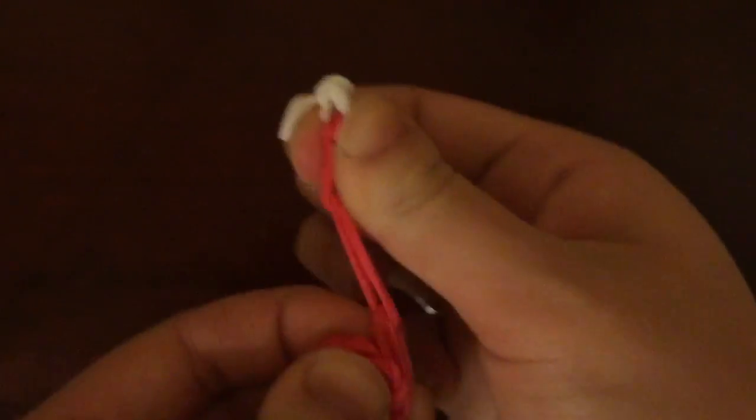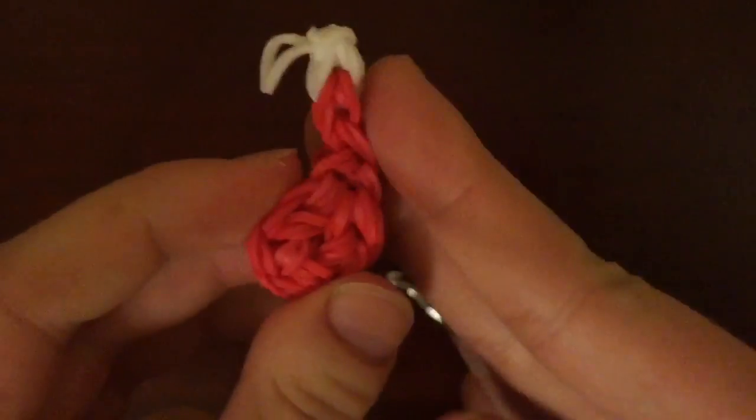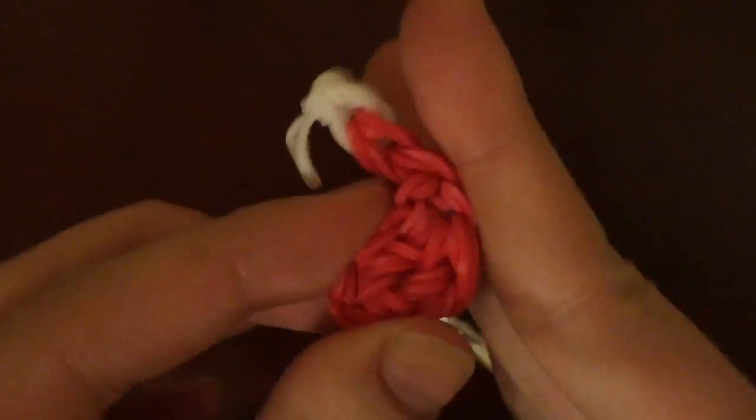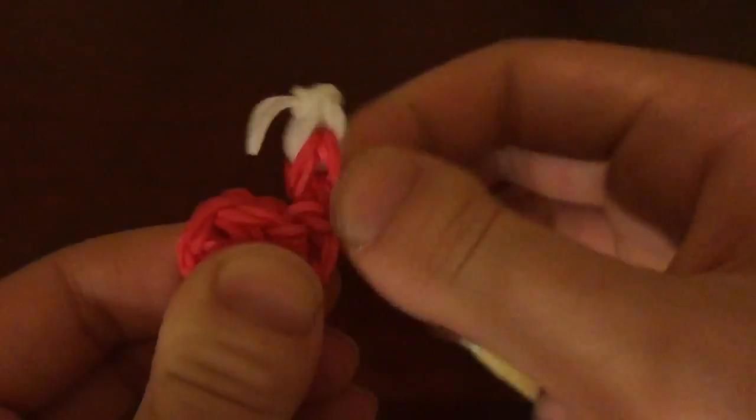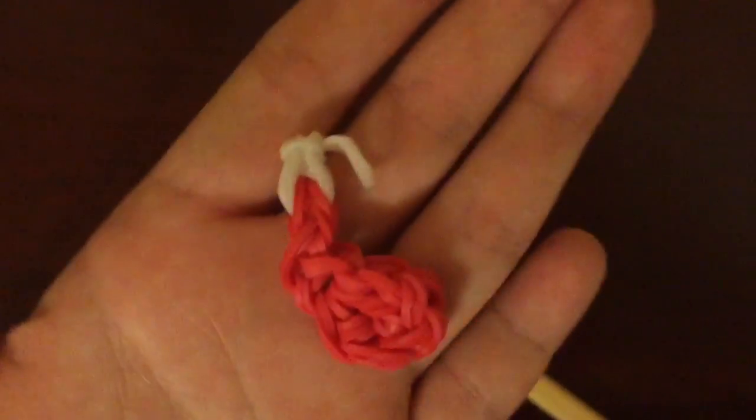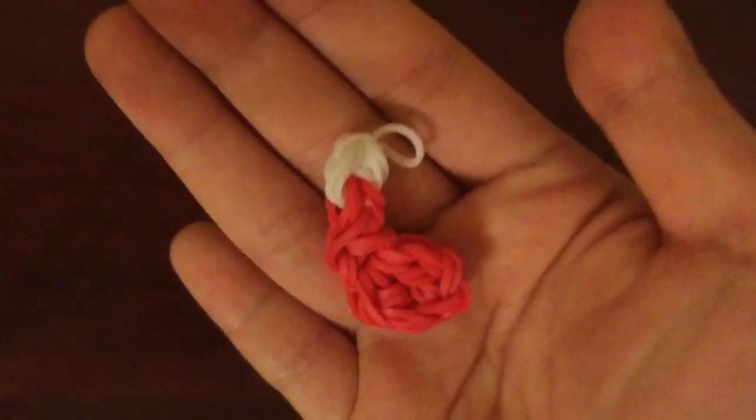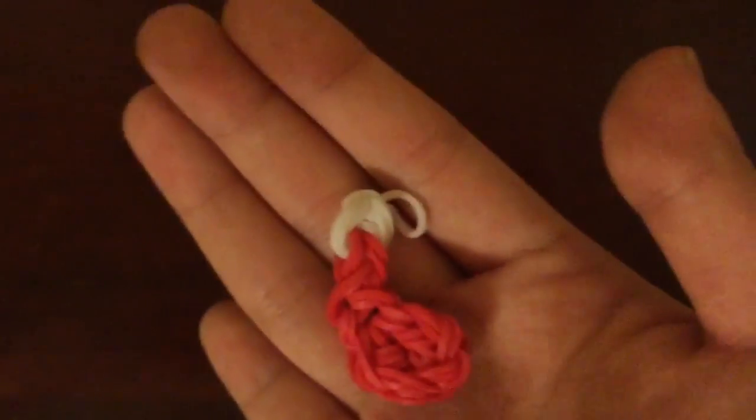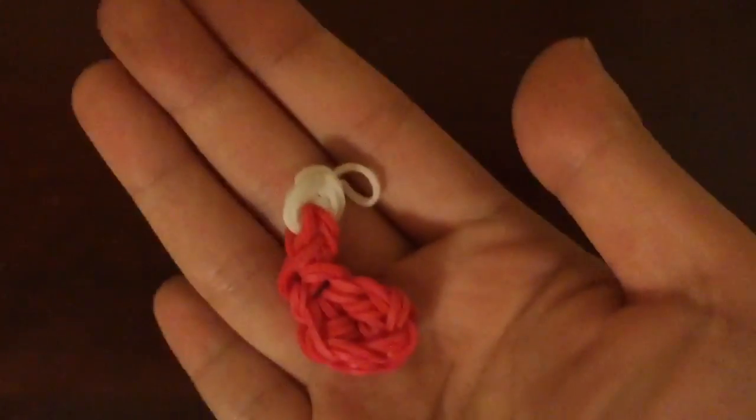And the last thing you need to do is just adjust things. So here I'm adjusting the side to kind of be a little more straight. So I'm just kind of adjusting until it looks more like a stocking. And you can also pull out the white parts a little more, and that is it. Thanks for watching, and please subscribe, and also check the description for more no-loom Christmas tutorials.